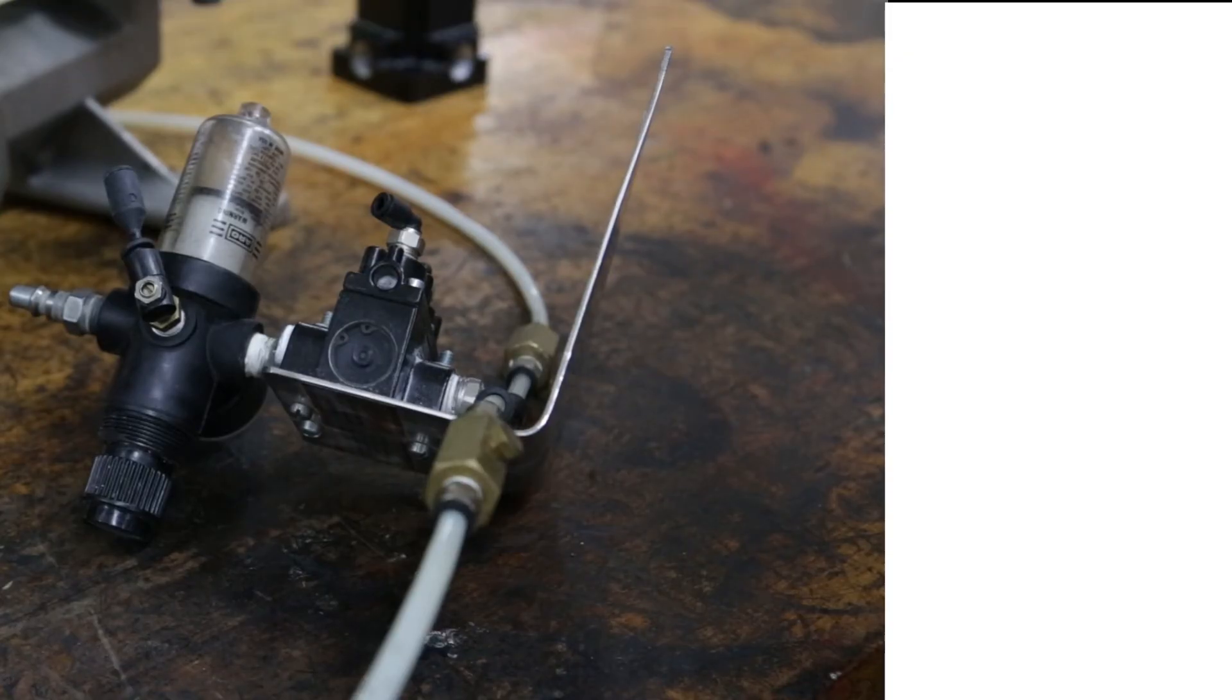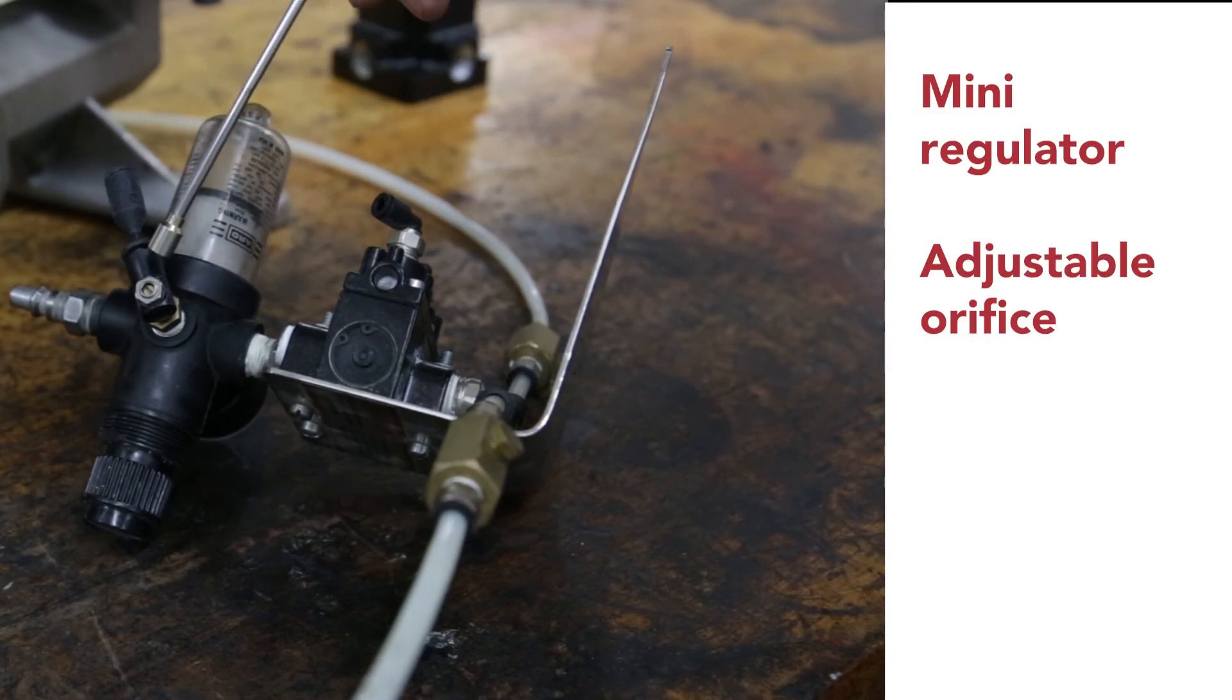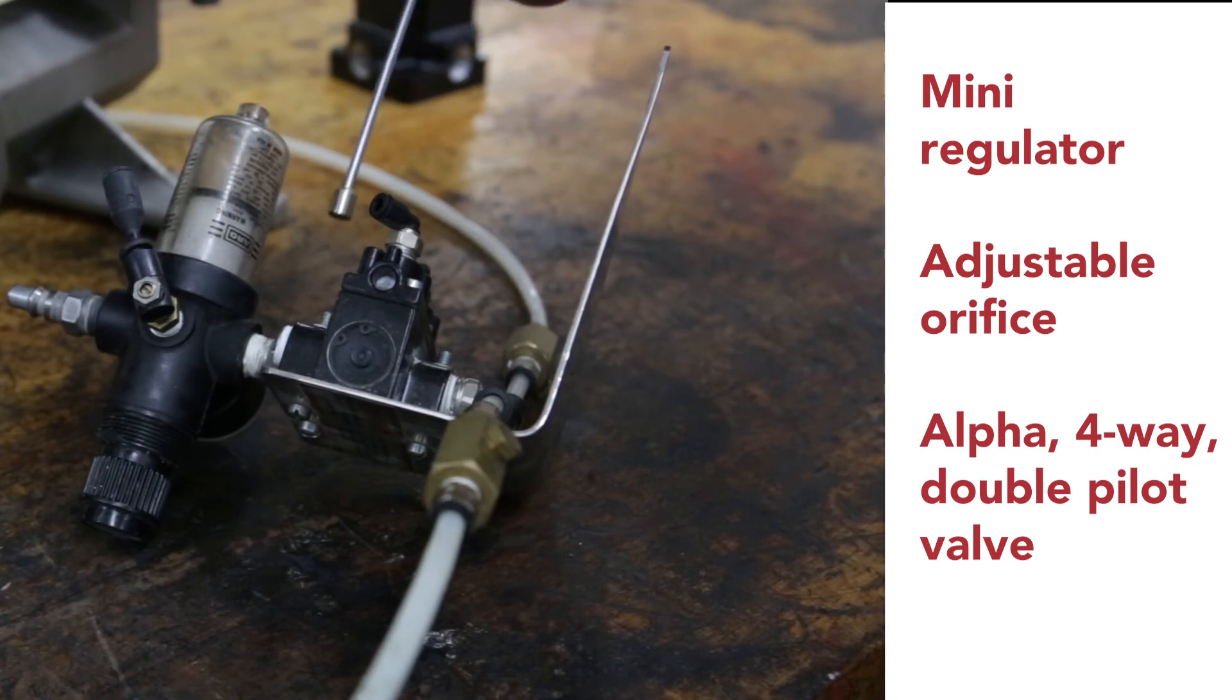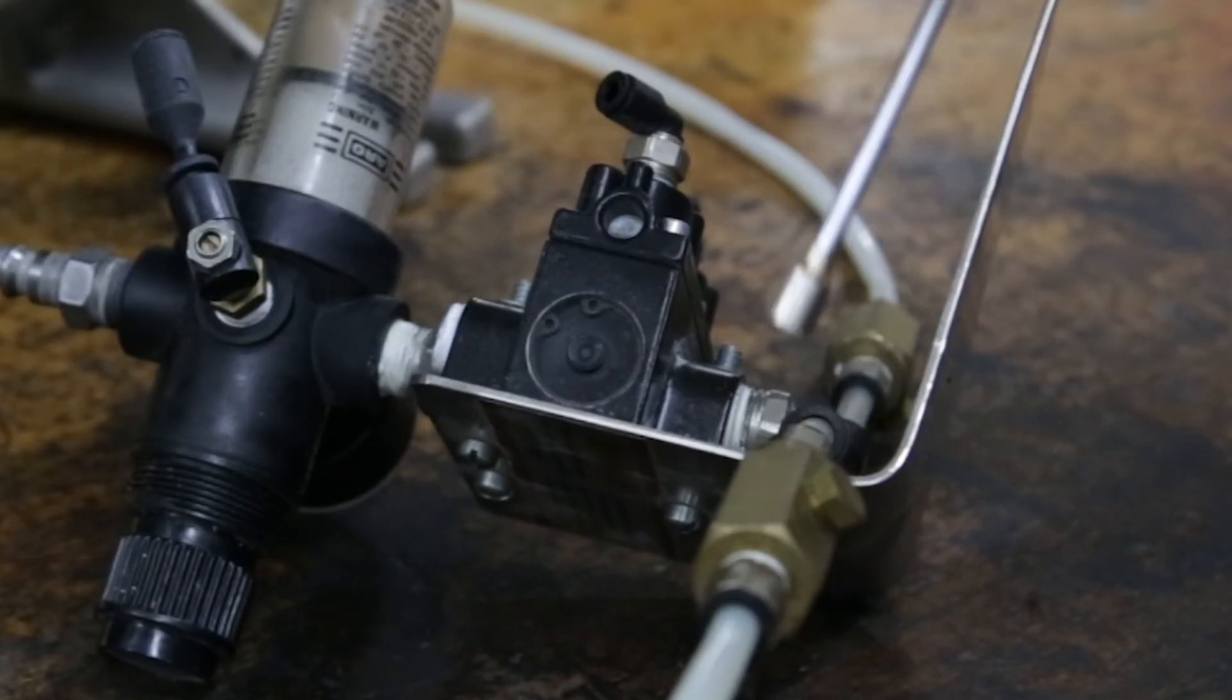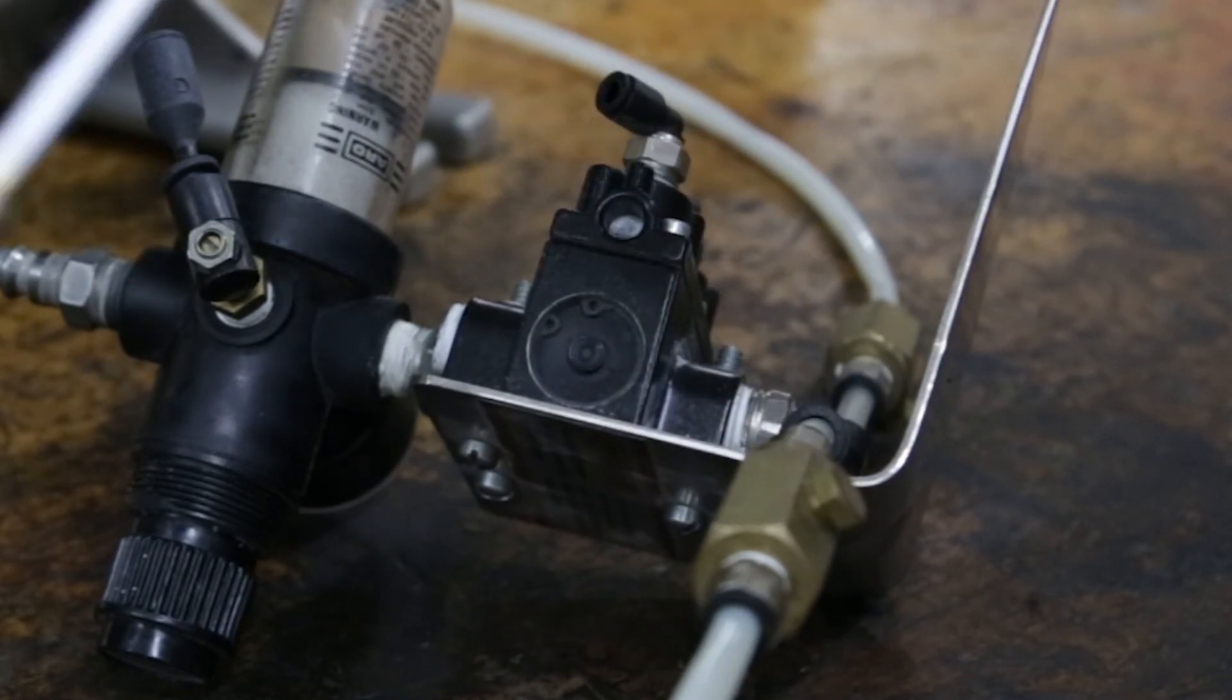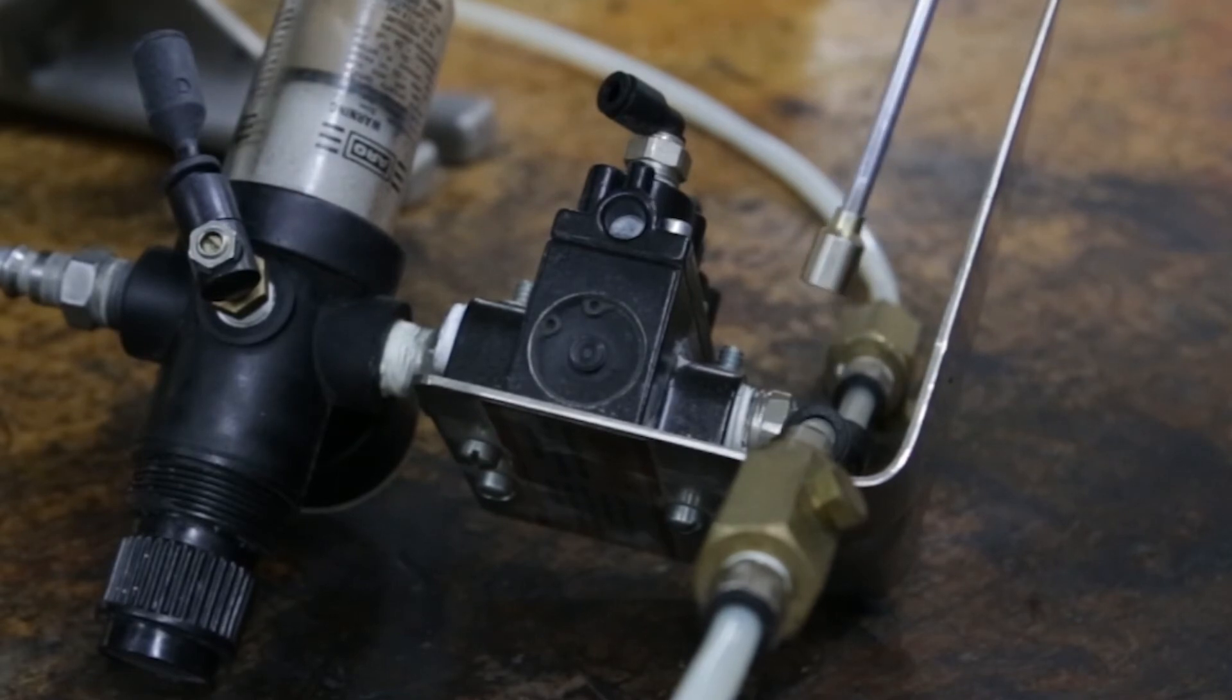The powder fluidization circuit consists of a mini regulator, an adjustable orifice, and an alpha four-way double pilot valve. In addition, the output tubing goes to each individual fluid cap and conveys air to fluidize the powder. In that line, we also have two check valves. The check valves prevent any air or powder from coming back through the alpha valve when we exhaust air, and alternately pressurize and exhaust each line.